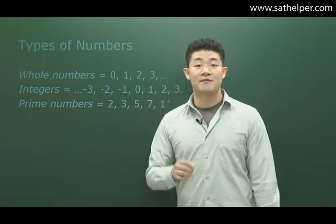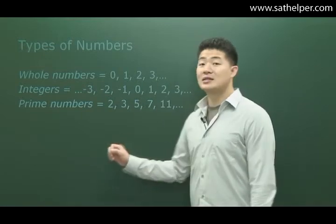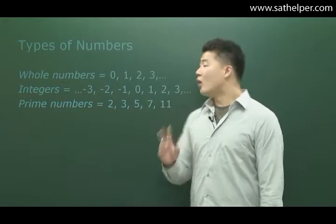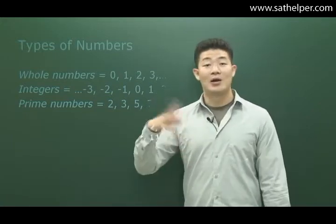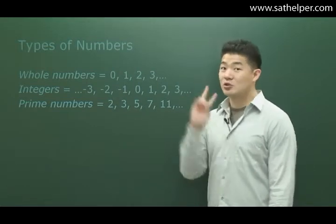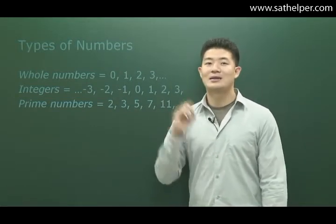Definition of a prime number. The definition is any number that is divisible by only two numbers. Again, only two numbers. One number is by one, and the other number is by itself. So any number that is divisible by two numbers, by one and by itself.